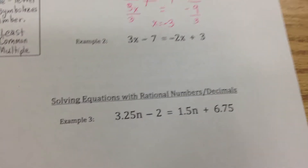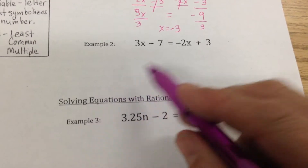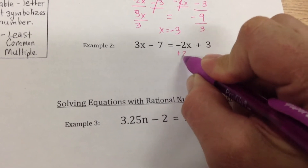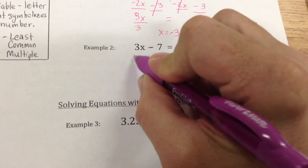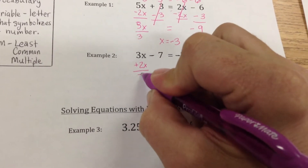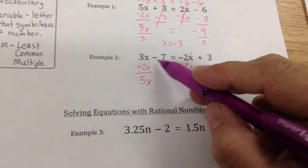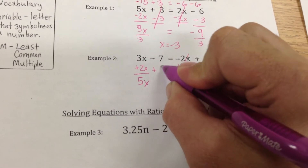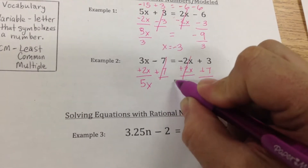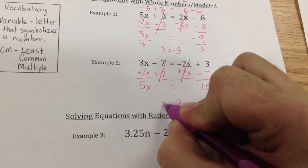Now we're going to solve more without the model. We've got variables on both sides — we want to get the variables on one side and the numbers on the other. So it probably makes sense to get rid of this negative 2x by doing the opposite and adding 2x. That cancels it out, making sure my x's are lined up, and gives me 5x over here. Now I want to get rid of that minus 7, so I add 7 — that cancels it out — and 3 plus 7 gives me 10. Dividing by 5 gives me an answer of x equals 2.